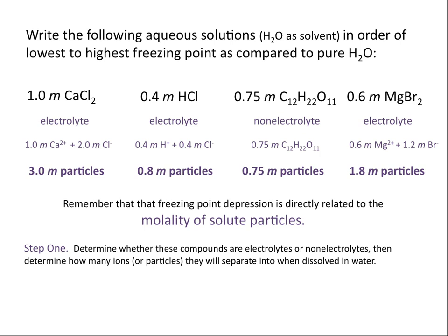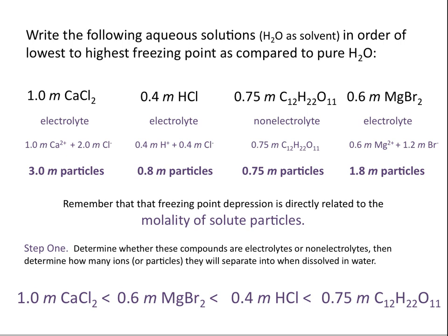Once we know how many particles are dissolved in each solution, we can put them in order. Since the freezing point depression constant is the same for all (same solvent), the solution with the highest concentration of particles has the lowest freezing point. Ranking from lowest to highest freezing point: calcium chloride (3 molal) has the lowest, followed by magnesium bromide (1.8 molal), then hydrochloric acid (0.8 molal), and the sucrose solution (0.7 molal) has the highest freezing point.